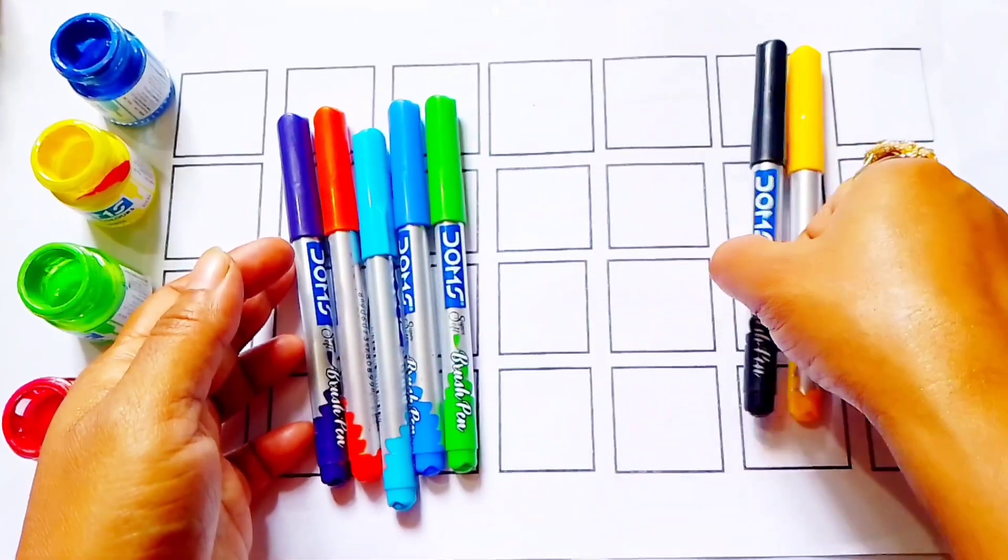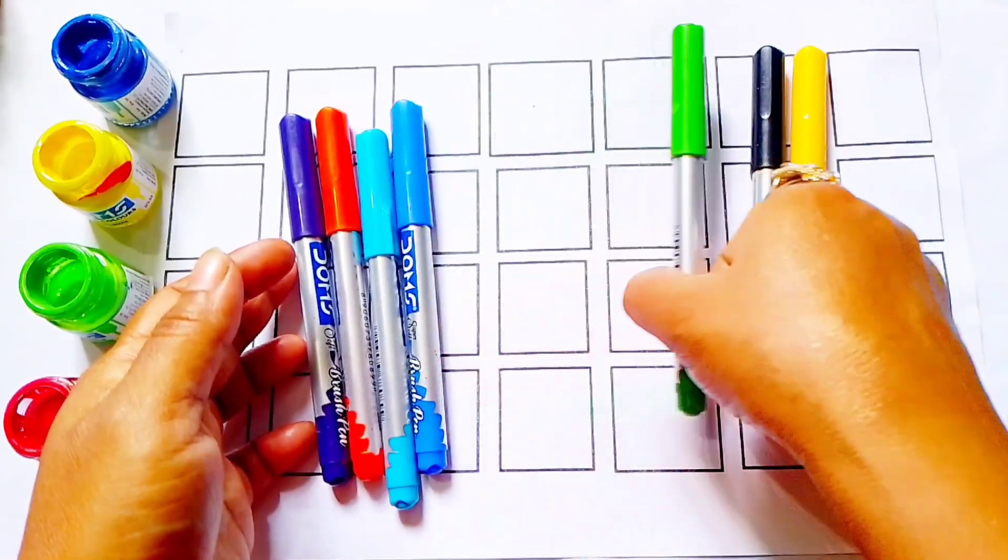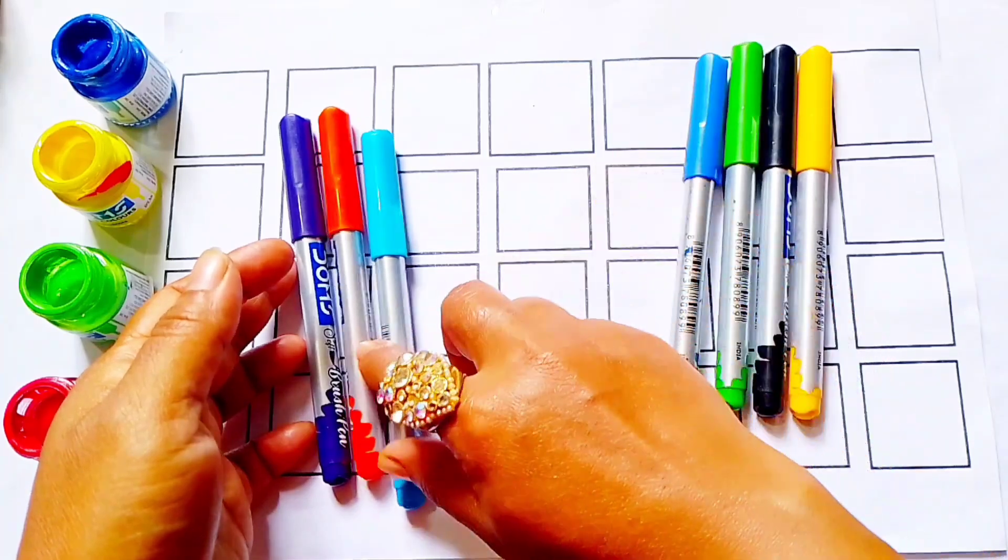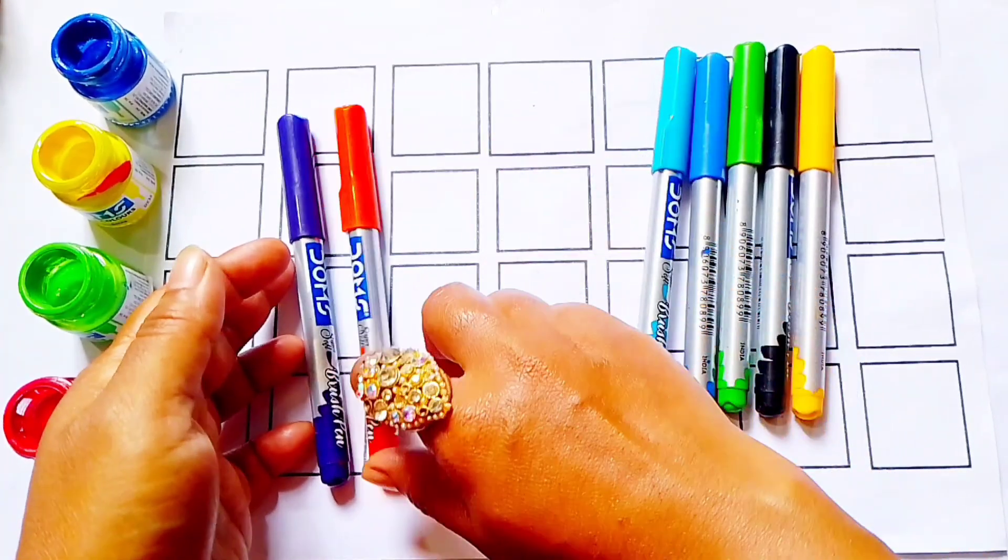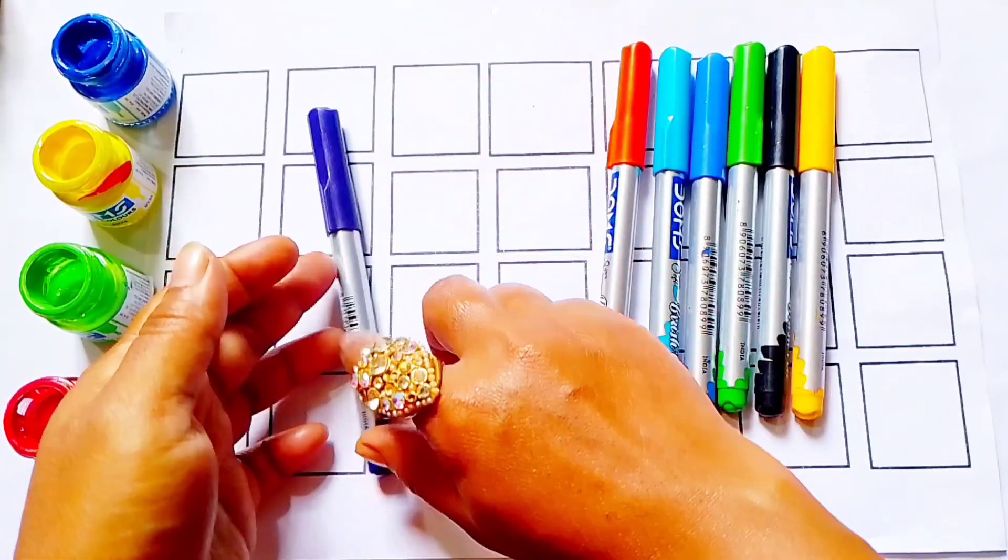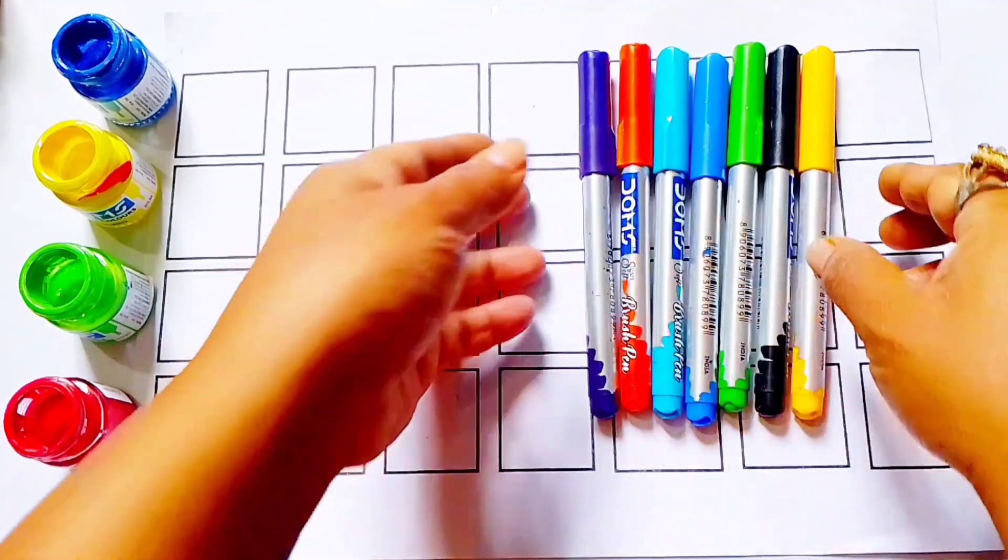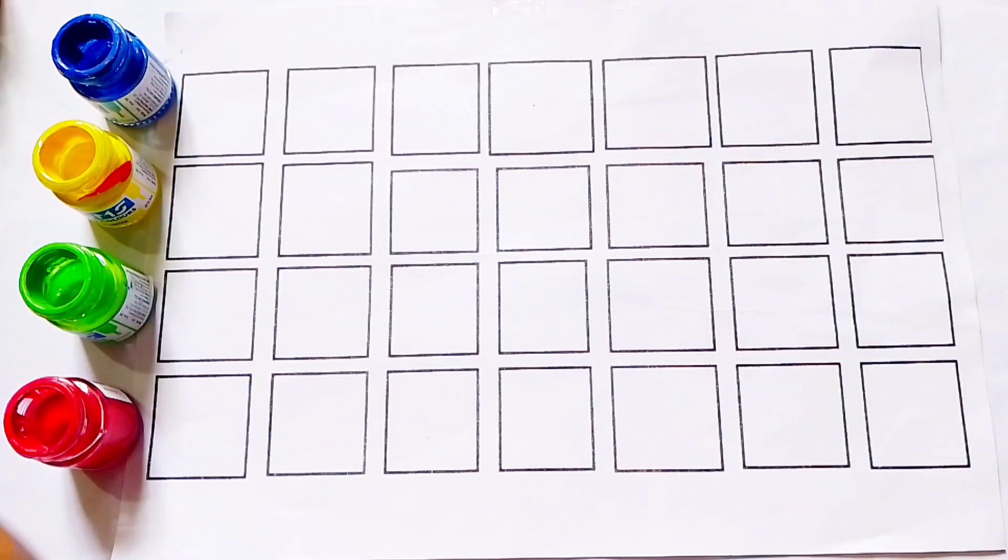Yellow color, black color, green color, blue color, sky blue color, orange color, purple color. Let's write in numbers.